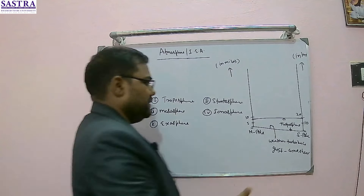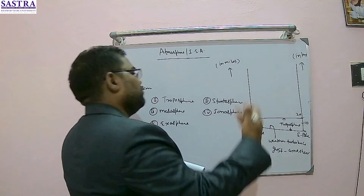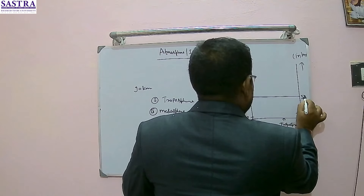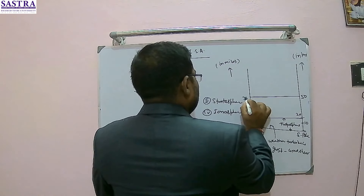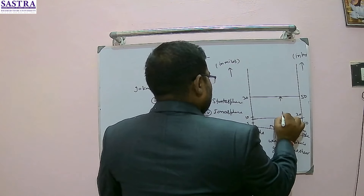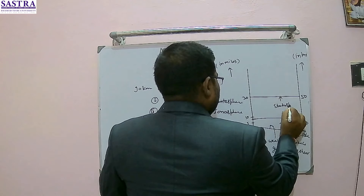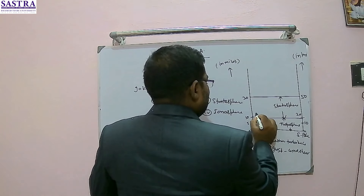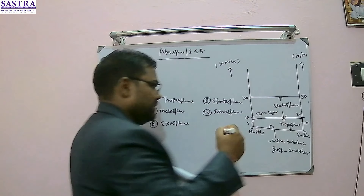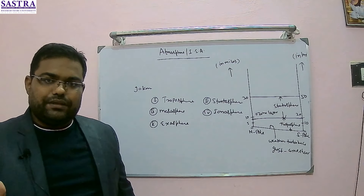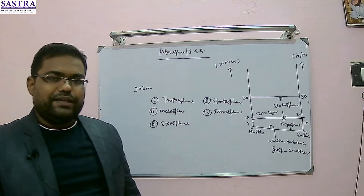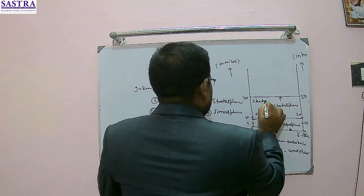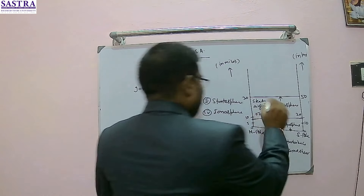Beyond the troposphere, if you are crossing around 11 kilometers and going up to 25 to 50 kilometers — this zone extends up to 50 kilometers, which is around 30 miles — this zone is the stratosphere. In this zone, the ozone layer will also be present within these 50 kilometers. In the stratosphere, it is not cloudy and stormy, and your airflow will be steady. Steady flow will be available in the stratosphere.